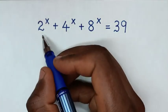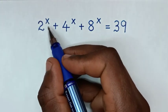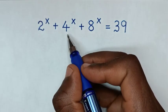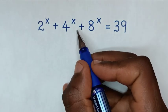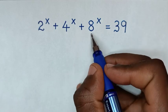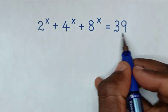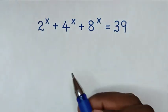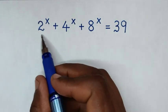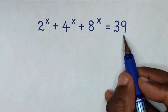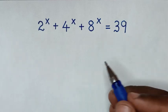Hello. How to solve 2^x + 4^x + 8^x = 39, to find the value of x from this equation.